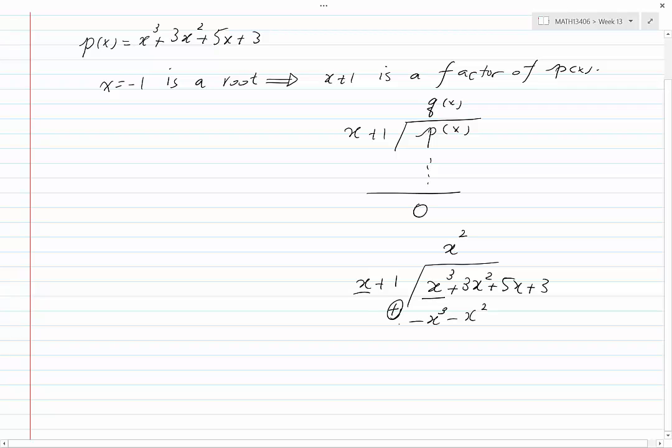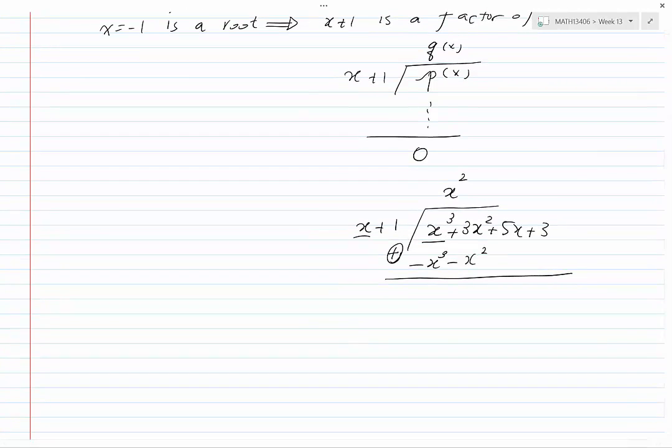Now we add these two terms. We have x cubed minus x cubed equal to 0. 3x squared minus x squared is 2x squared. And we have 5x plus 3.